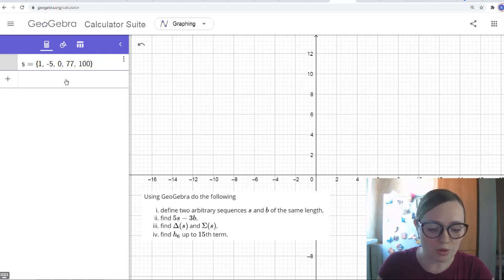For example, if I want to get, let's say, the first term of the sequence, I get 1. The second term is minus 5. So the indexing starts from 1 here.